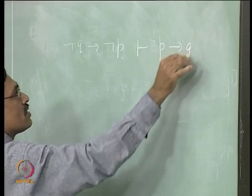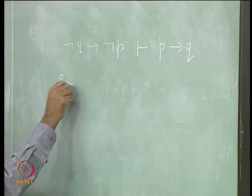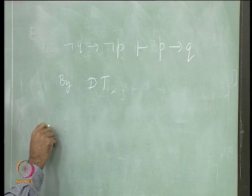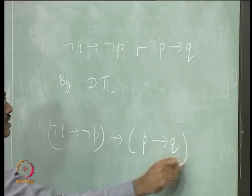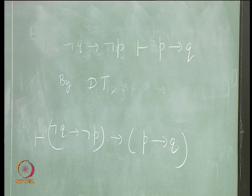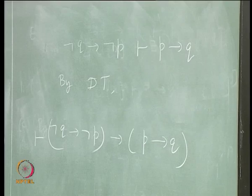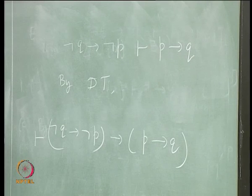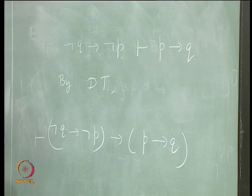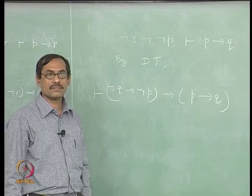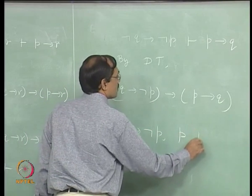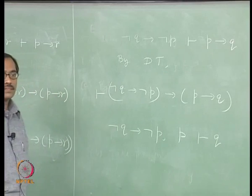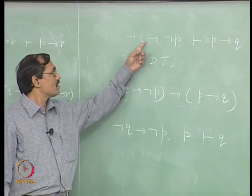By the deduction theorem, not Q implies not P implies P implies Q is a theorem. If you go one step further, the other direction would say: from not Q implies not P and P, therefore Q. That is also proved along with contraposition. This is another consequence.